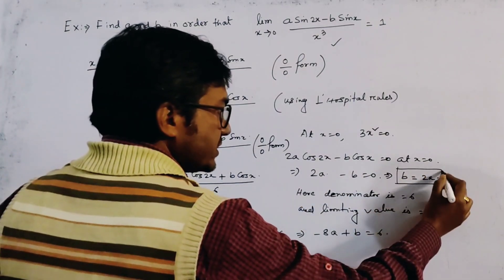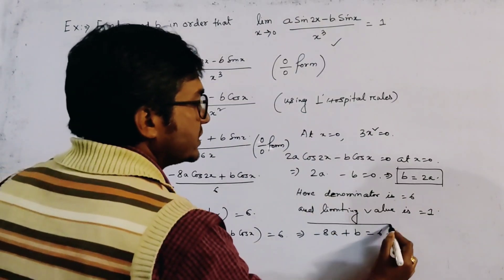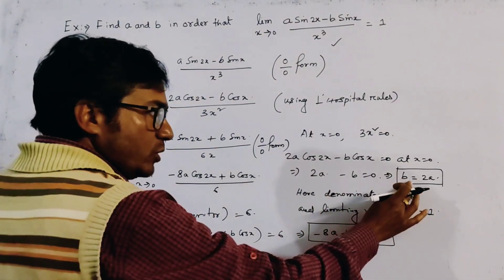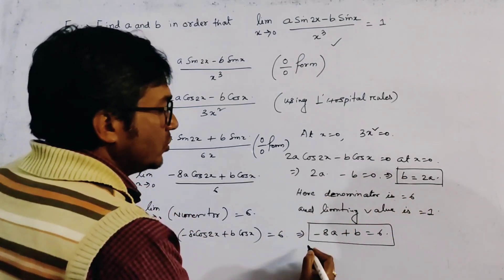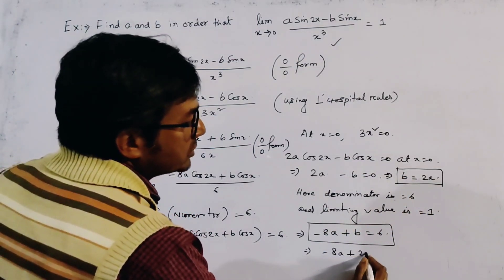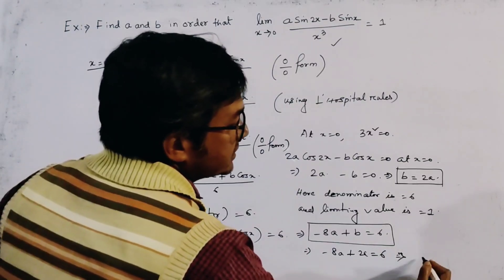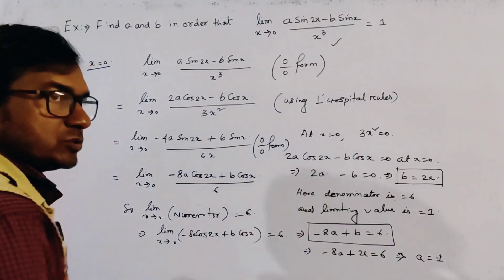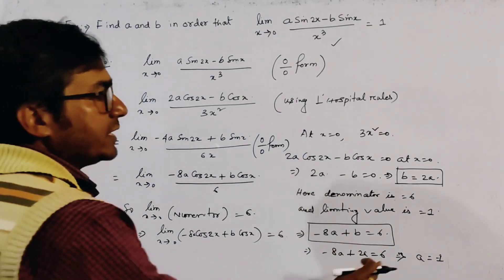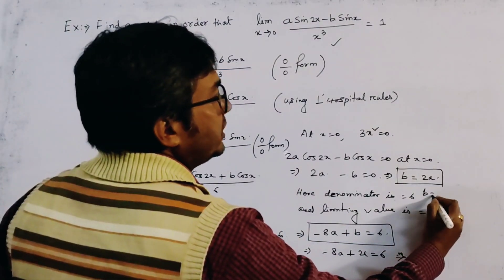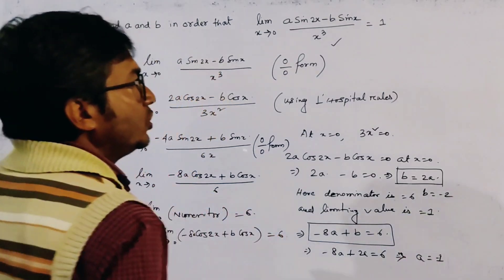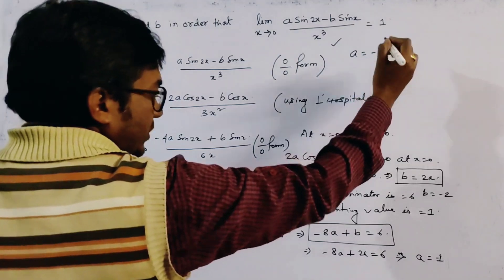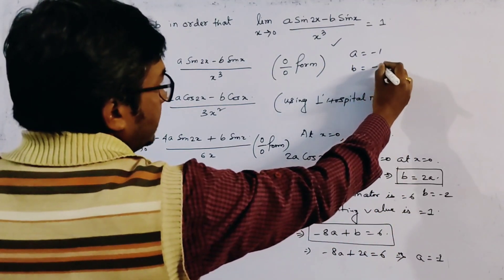Substituting x = 0 gives minus 8A plus B equals 6. We now have two relations: B equals 2A, and minus 8A plus B equals 6. Substituting B = 2A into the second equation: minus 8A plus 2A equals 6, giving minus 6A equals 6, so A equals minus 1. Therefore B equals 2 times minus 1 equals minus 2. The values are A = minus 1 and B = minus 2.